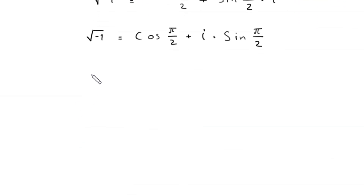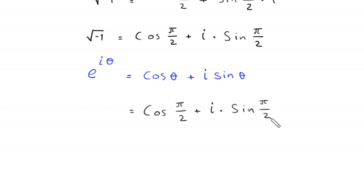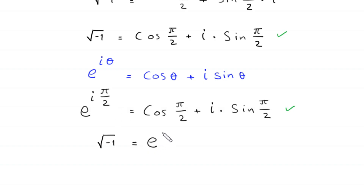Now, by using Euler's formula — e to the power i times theta is equal to cos of theta plus i times sin of theta — by comparing this equation, we can write root negative 1 is equal to e to the power i times pi over 2.